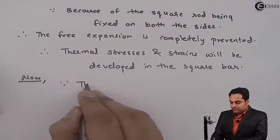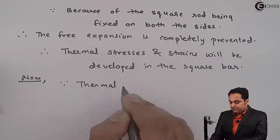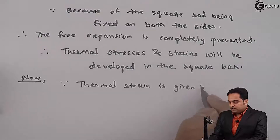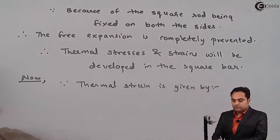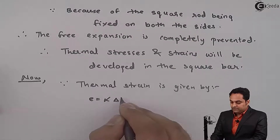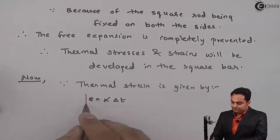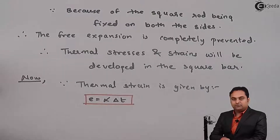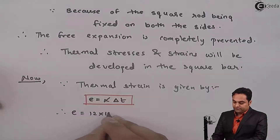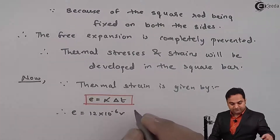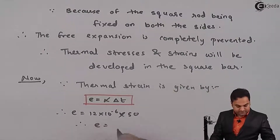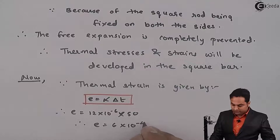Since the free expansion is completely prevented, thermal stresses and strains will be developed. The thermal strain formula is: e = α × ΔT. Here α = 12×10⁻⁶ and the temperature change ΔT = 50, so the thermal strain e = 6×10⁻⁴.